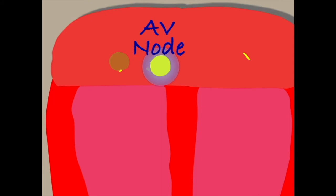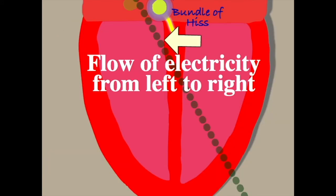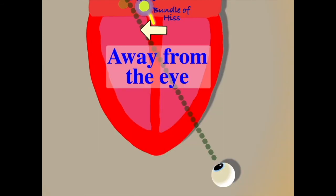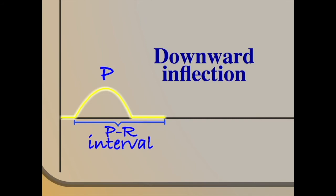The AV node now passes the electrical impulse down into the ventricles. Because the left ventricle is slightly bigger than the right, to start with there is a slight flow of electricity from left to right. Therefore, the electrical impulse travels briefly away from the eye, leading to a small downward inflection on our ECG, which we will label Q.